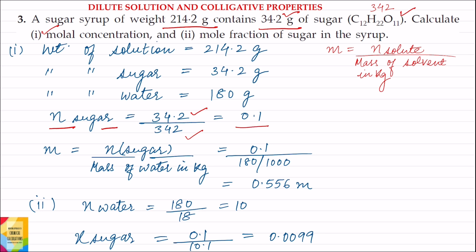Now we find the mass of solvent in kg. The weight of the solution is given as 214.2 grams and the weight of sugar is 34.2 grams. So the weight of solvent, that is water, equals weight of solution minus weight of solute: 214.2 minus 34.2, which equals 180 grams. So the weight of water is 180 grams.